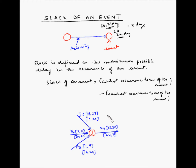The earliest occurrence time of event 1 is when all three activities I, D, and F have been completed. So we take the latest of the earliest finish times of all three activities. For I the earliest finish time is 23, for D it is 11, and for F it is 9. The latest among these is 23, so by the 23rd day all three activities would have been completed. Therefore the earliest occurrence is 23.